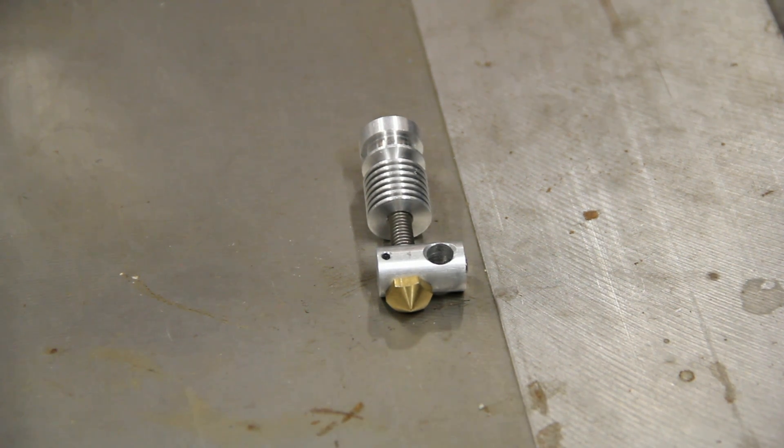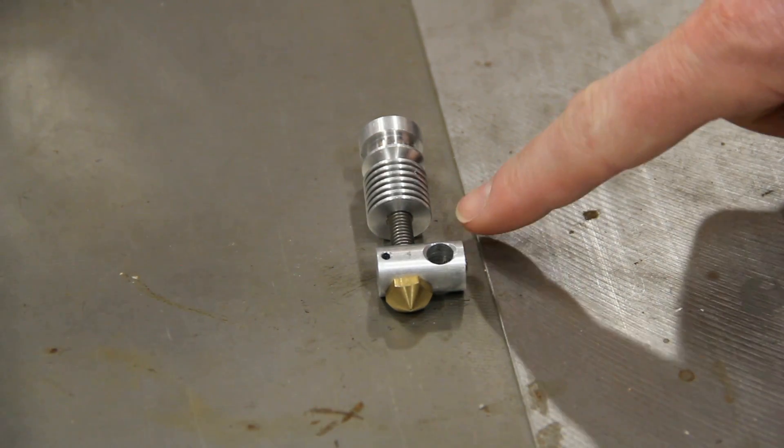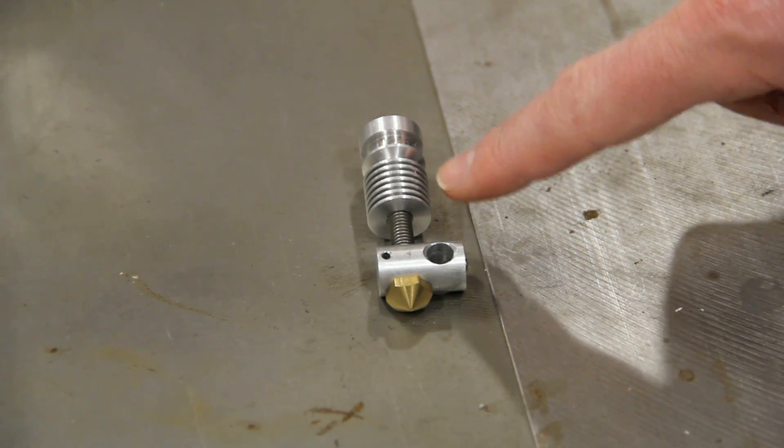And I'm not going to talk too much about the difference between the all-metal and what I would call mostly metal hotends right now. That's beyond the scope of this video. But suffice to say that despite everything you can see looks like metal, there is a PTFE or a Teflon liner inside.